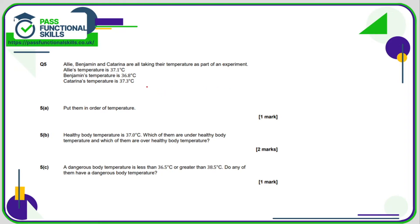Question number five: we need to put these in order of temperature. 37.3 is bigger than 36.8 and 37.1, so it's going to be Katarina first, then followed by Ali, then Benjamin. Healthy body temperature is 37. Which of them are under and which of them are over? Who is under 37? Well, that is Benjamin who is under. Therefore, Ali and Katarina are over.